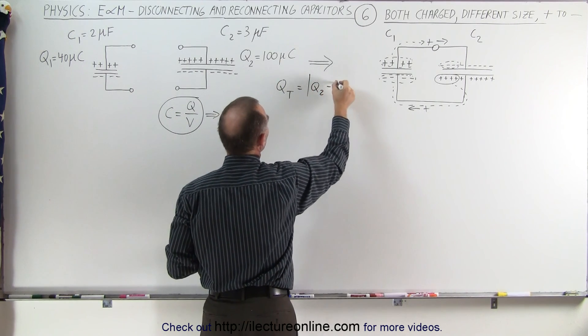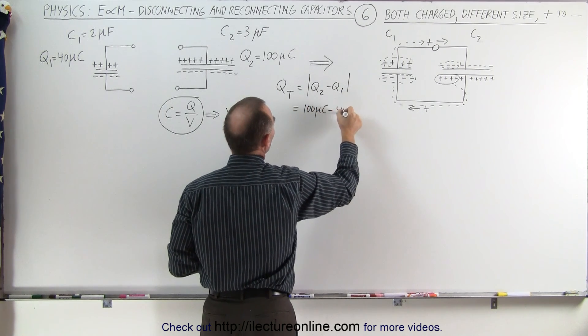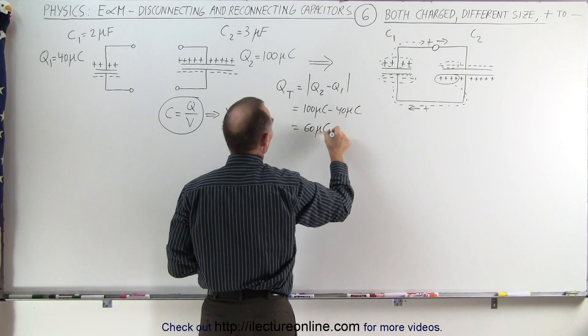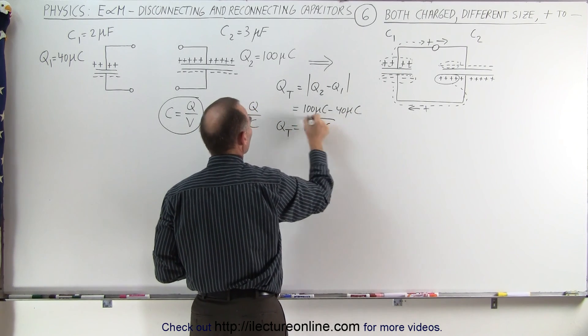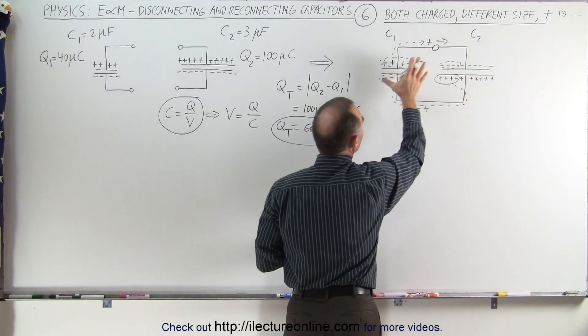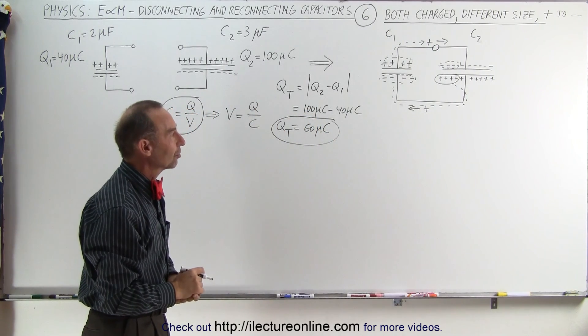This means then that the total charge that you end up with is going to be the difference of the two that you started with. In this case, Q2 minus Q1. So that would be 100 microcoulombs minus 40 microcoulombs, which is equal to 60 microcoulombs. That will be the total charge remaining after some of these charges have negated these charges, and then the remainder will redistribute themselves across the two capacitors.